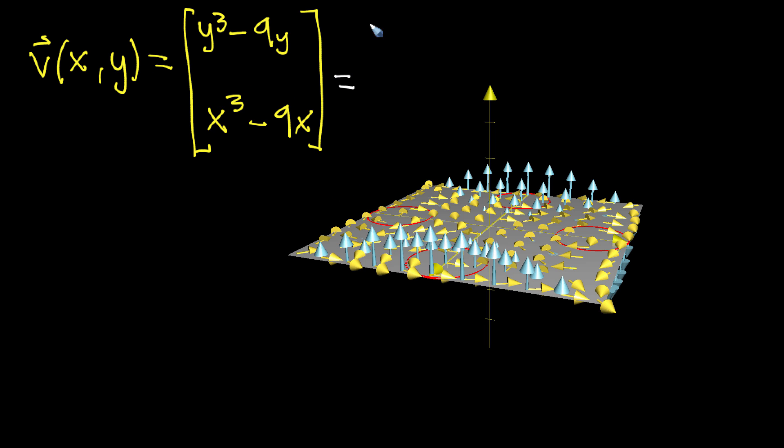Because we know how to compute the 2D curl at this point. You see if this whole thing, if we give names to the two different component functions as p and q, then the curl, the 2D curl of this guy, 2D curl of the vector field v as a function of x and y...